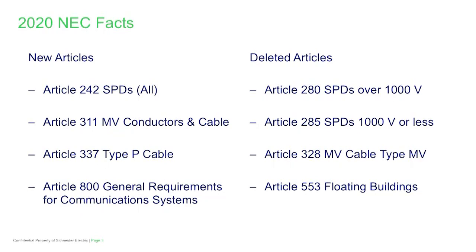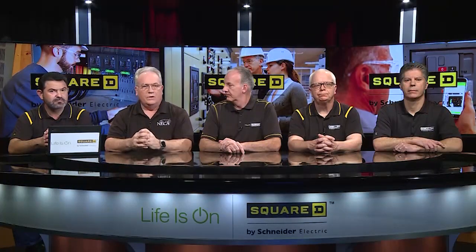The next new article is Article 311, and it deals with medium voltage conductors and cables. This resulted from removing all of the medium and high voltage provisions in Article 310 and relocating them into a new Article 311.